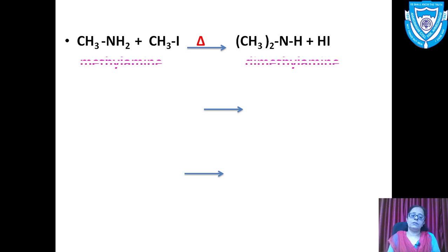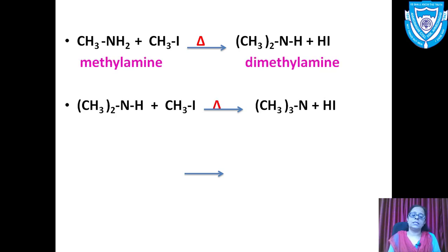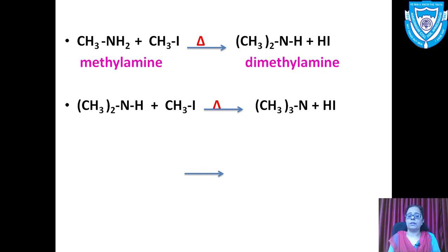In the second reaction, the dimethylamine (secondary amine) obtained reacts with another molecule of methyl iodide. The last hydrogen on the —NH group is again replaced by a methyl group, forming trimethylamine (a tertiary amine), and HI is again liberated.